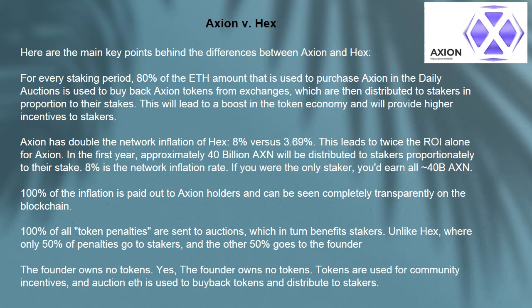Axion has doubled the network inflation of HEX: 8% versus 3.69%. This leads to twice the ROI alone. For Axion, in the first year, approximately 40 billion AXN will be distributed to stakers proportionately to their stake. 8% is the network inflation rate. If you were the only staker, you'd earn all 40 billion AXN.